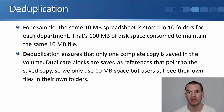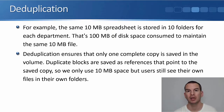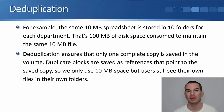Now rather than having 10 copies on disk of that 10 megabyte file, we're only going to have one copy taking up disk space. The other nine copies are just going to be composed of pointers. So now we're just using up 10 megabytes of disk space for one copy, rather than using up 100 megabytes.